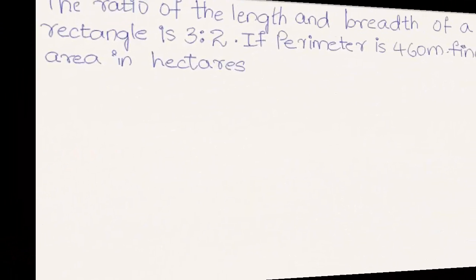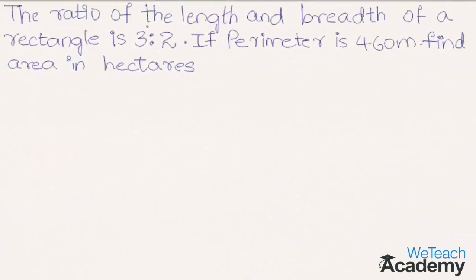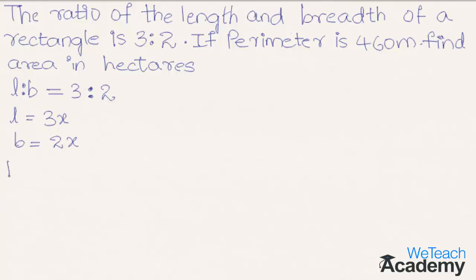Now let us proceed and solve one more example. The ratio of length and breadth of a rectangle is 3 is to 2, and if the perimeter is 460 meters, find the area in hectares. Given L to B = 3 is to 2, let length = 3x and breadth = 2x. We know that perimeter of a rectangle = 2 times (L + B), and the given perimeter is 460.